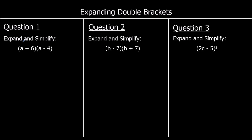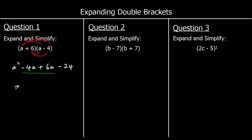Question 1: a times a is a squared. a times negative four is negative 4a. Six times a is 6a. Six times negative four is negative 24. Collecting like terms: negative 4a plus 6a is 2a, so we've got a squared plus 2a minus 24.